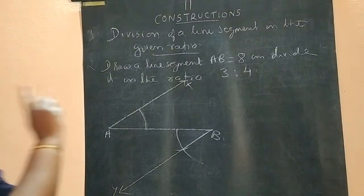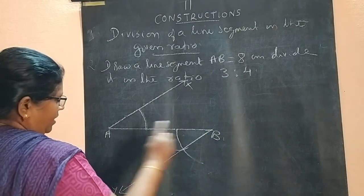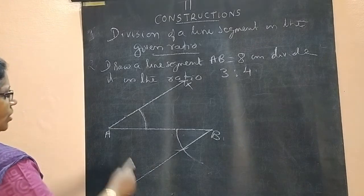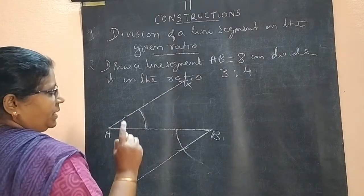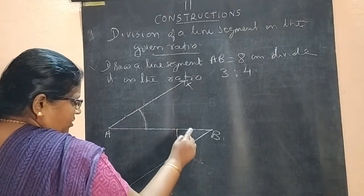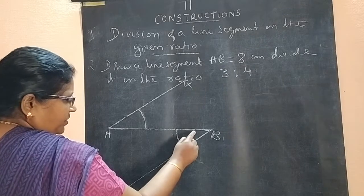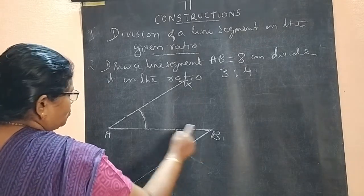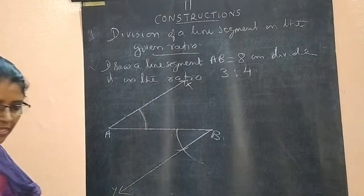So what you have to do? Steps you have to write. Step 1: Draw AB equal to 8 cm. Step 2: Draw AX by making some angle with AB. Step 3: Construct the same angle at B such that angle ABY is equal to angle BAX.